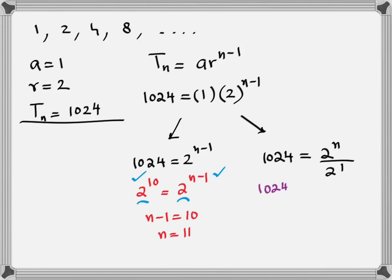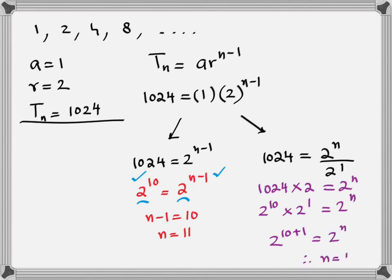On the right-hand side option: 1024 multiplied by 2 equals 2 raised to the power of n. Since 1024 is 2 to the power of 10, and 2 is 2 to the power of 1, using the rules of indices, 2 to the power of 11 equals 2 to the power of n, therefore n equals 11. If the examiner asks for the sum of all terms in the series, that will be covered later using the sum formula.